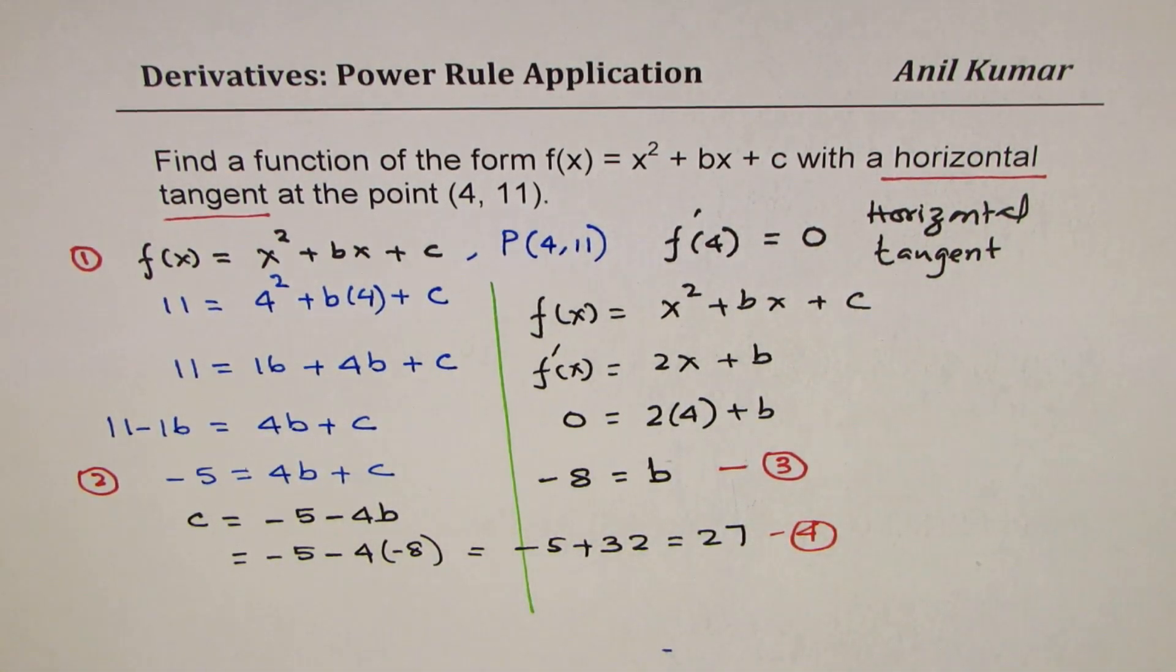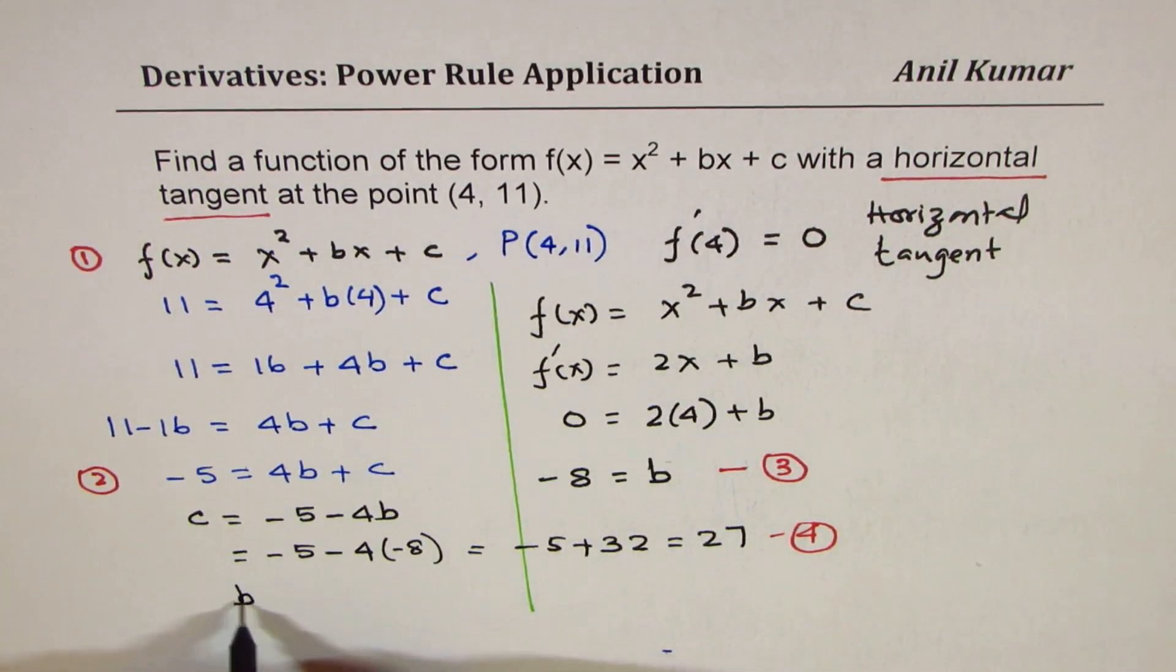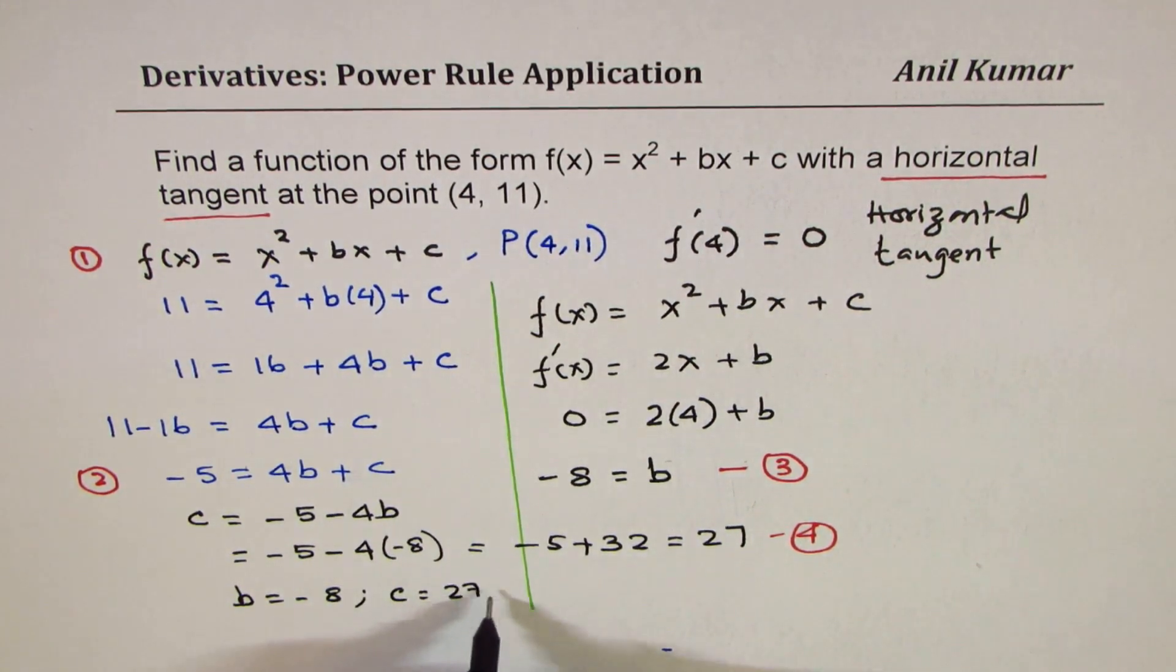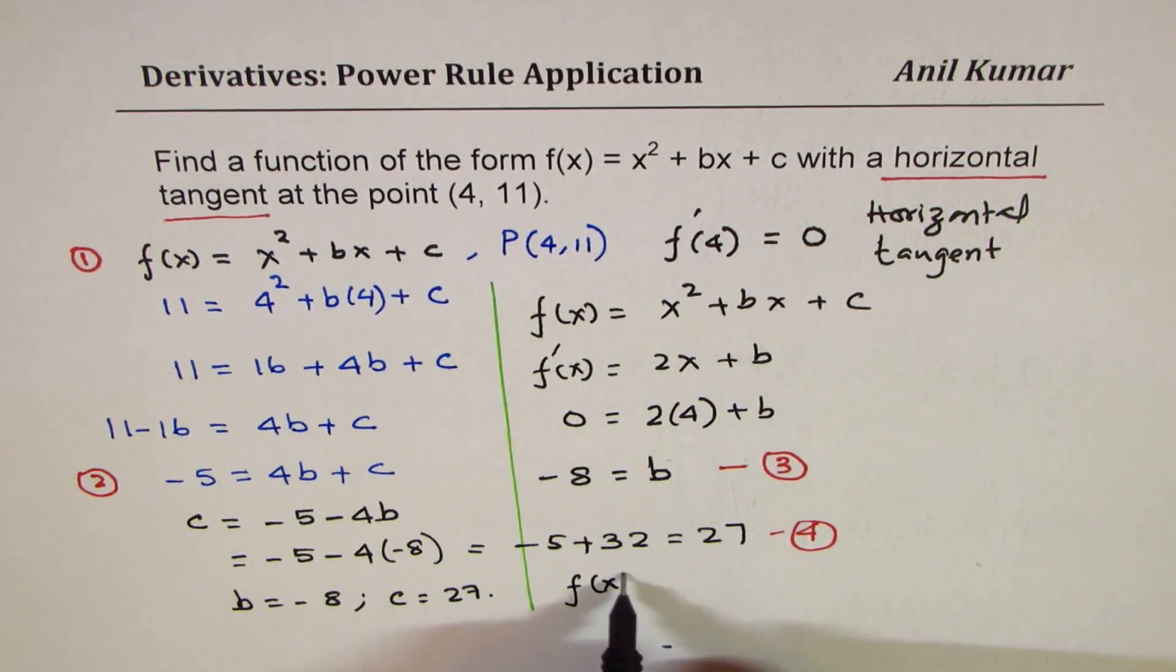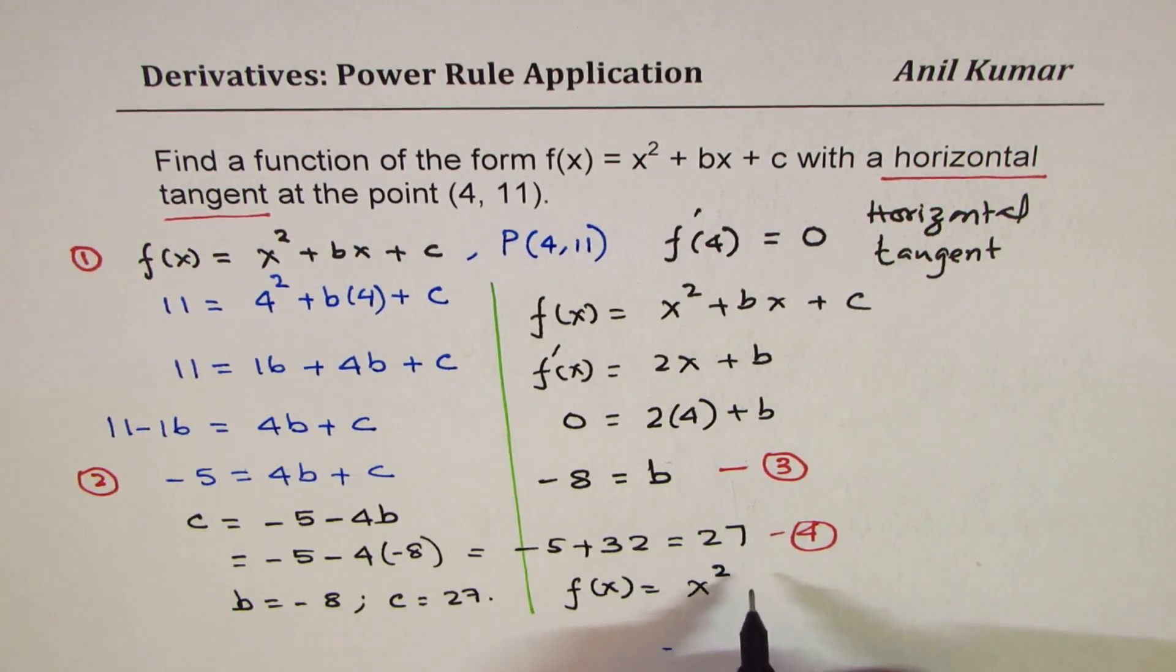But now we have solved both b and c. We can say b = -8 and c = 27. And therefore, the function f(x) = x² - 8x + 27.